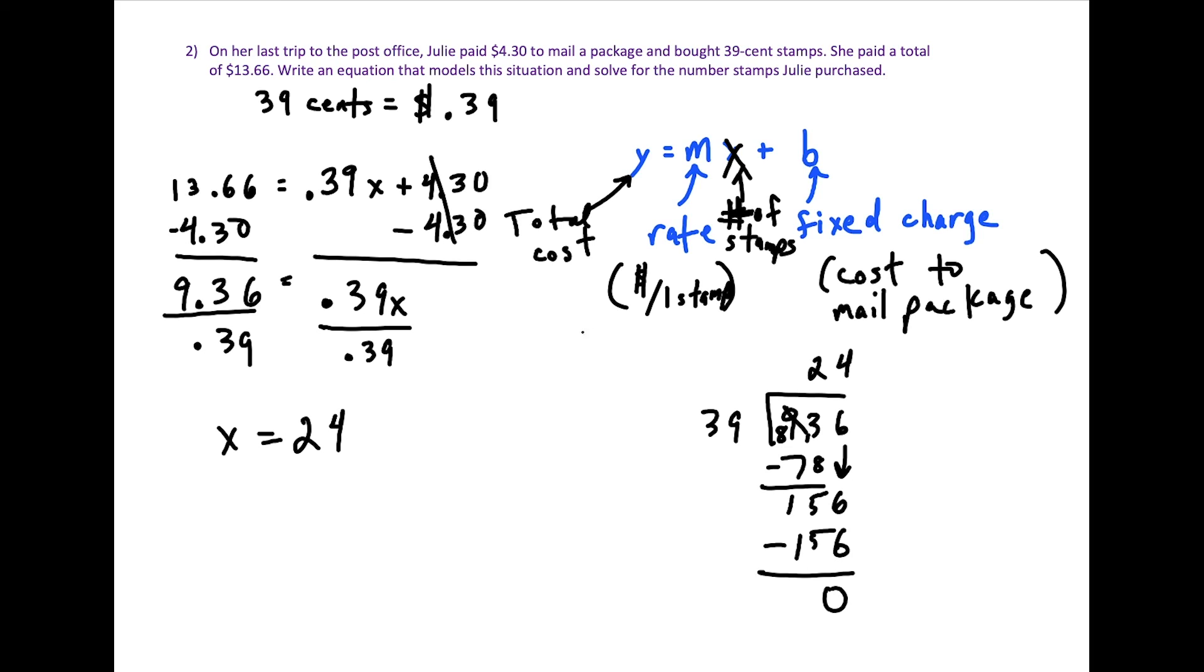So x is equal to exactly 24. And remember, x represents the number of stamps. So we want to solve for the number of stamps that Julie purchased. x is equal to 24, and 24 represents the number of stamps. And this is our final solution to question two.